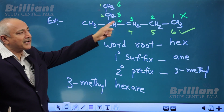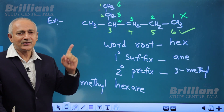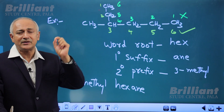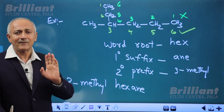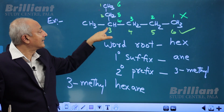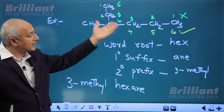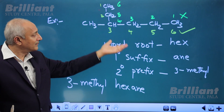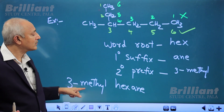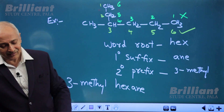One more example. We follow the same three rules: first, identify the longest continuous carbon chain; then number the carbon atoms so the substituent gets the lowest number. Starting from one end gives position three, starting from the other gives position four, so we choose numbering that gives three. The longest chain has six carbon atoms, word root 'hex,' primary suffix 'ane,' secondary prefix '3-methyl.' So the name of this compound is 3-methylhexane.